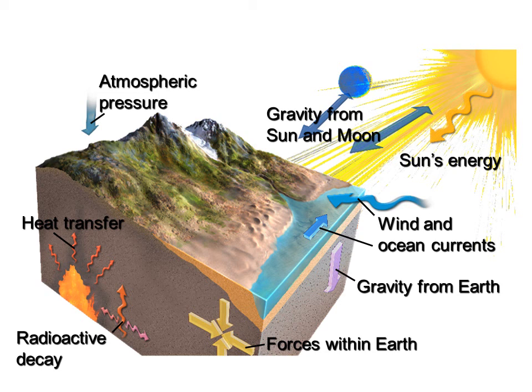Our last internal force is heat transfer. Heat can be transferred from hotter rocks to cooler ones, such as near molten rock magma. If you're near a magma chamber, you have extremely hot material next to cooler gray rock, so heat is being transferred from the hot magma to the cooler rocks — just like putting your hand on a hot iron. To summarize: external forces are atmospheric pressure, gravity from the sun and moon, the sun's energy, and wind and ocean currents. Internal forces are gravity from the Earth, tectonic forces within the Earth, radioactive decay, and heat transfer.